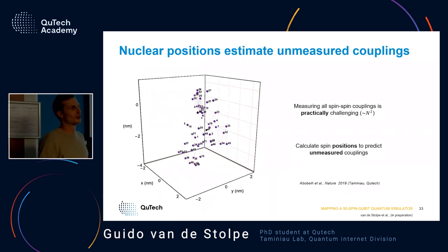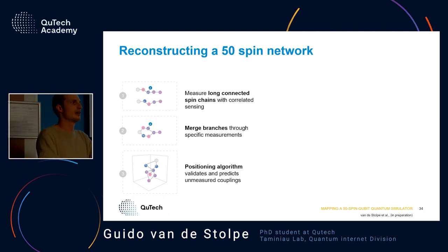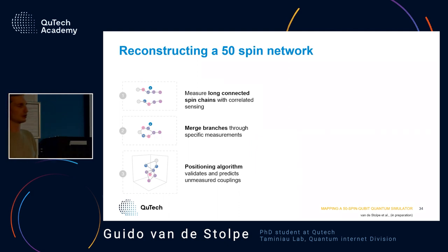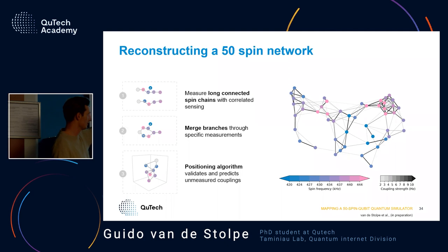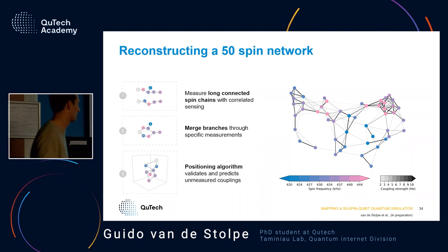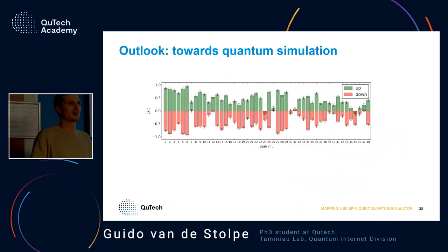The basic structure is: we measure these long connected chains, merge them together, and then use this positioning algorithm to calculate the couplings we didn't measure explicitly. That gives a picture where I plot all 50 spins — the color indicates their frequency — and I also plot as links the coupling strength between these spins. This is our 50-qubit quantum simulator where we want to do experiments.